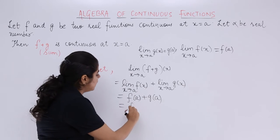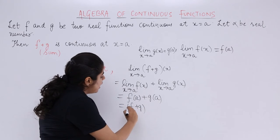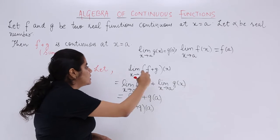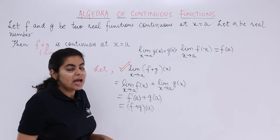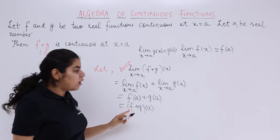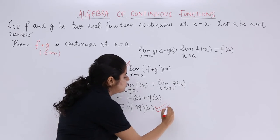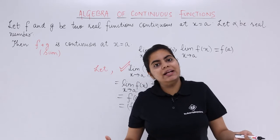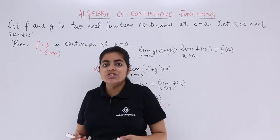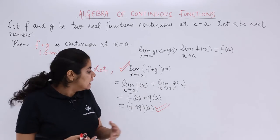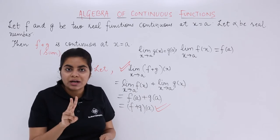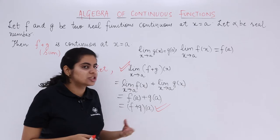That also means what? That means we can actually club them together. So it becomes f plus g of a. And since I started with the limit and I reached that it is all equal to the value of the function, left hand limit is equal to right hand limit is equal to the value of the function. That means this is about continuity. That means the sum of two continuous functions is also continuous.